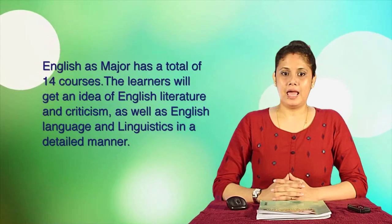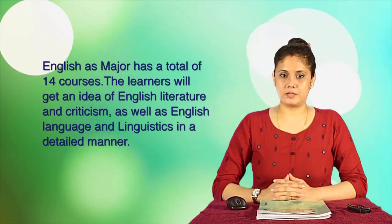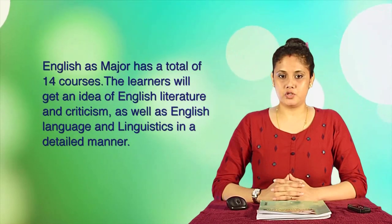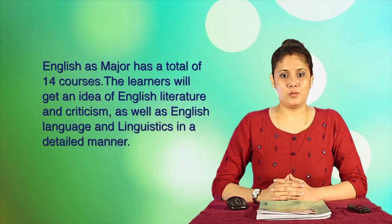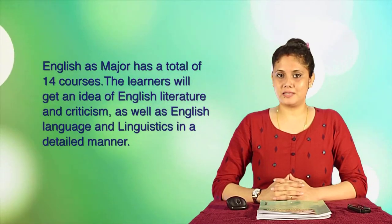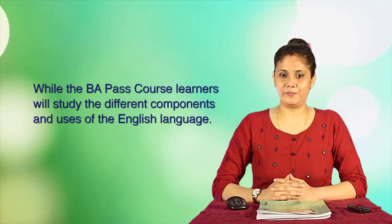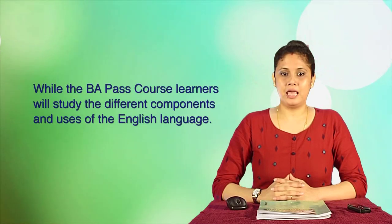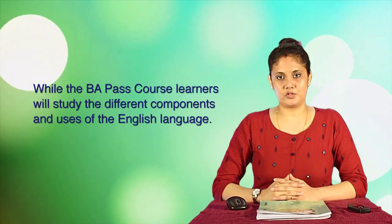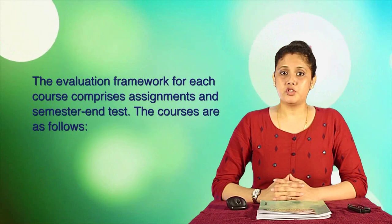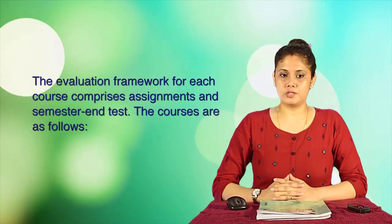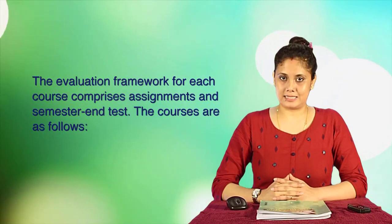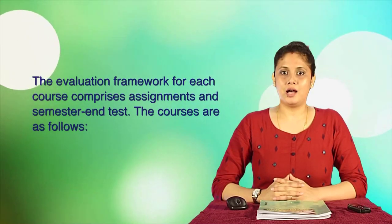The BA English as a major has a total of 14 courses. The learners will get an idea of English language and criticism, as well as English language and linguistics, in a detailed manner. While the pass course learners will study the different components and uses of the English language. The evaluation framework for each course comprises assignments and semester-end tests.